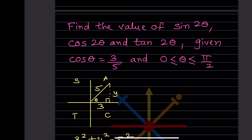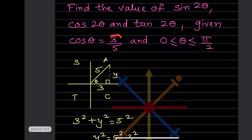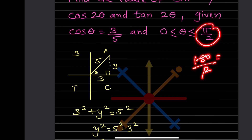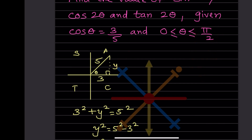Next problem: find sin2θ, cos2θ, and tan2θ, given cosθ = 3/5, with 0 ≤ θ ≤ π/2 (first quadrant).